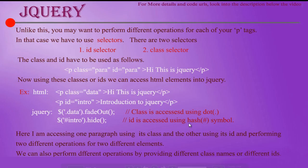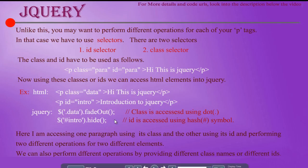We can also perform different operations by providing different class names — a different class name for each element. Or otherwise, using different id names — a different id name for each element. We can perform different operations by providing different class names and different id names.